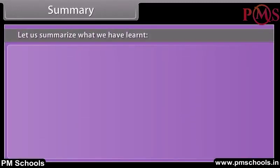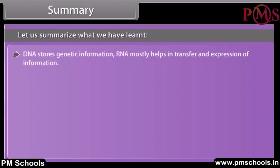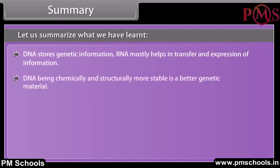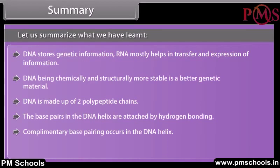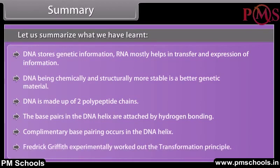Let us summarize what we have learned. DNA stores genetic information. RNA mostly helps in the transfer and expression of information. DNA, being chemically and structurally more stable, is a better genetic material. DNA is made up of two polynucleotide chains. The base pairs in the DNA helix are attached by hydrogen bonding. Complementary base pairing occurs in the DNA helix. Frederick Griffith experimentally worked out the transformation principle.